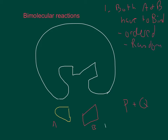The second possibility is that A binds first to the enzyme — A plus E — and then it creates a modified enzyme. Whenever A comes off and forms product P, we're left with a modified enzyme. That modified enzyme can then bind with B, which converts the enzyme back to its natural state and creates Q.